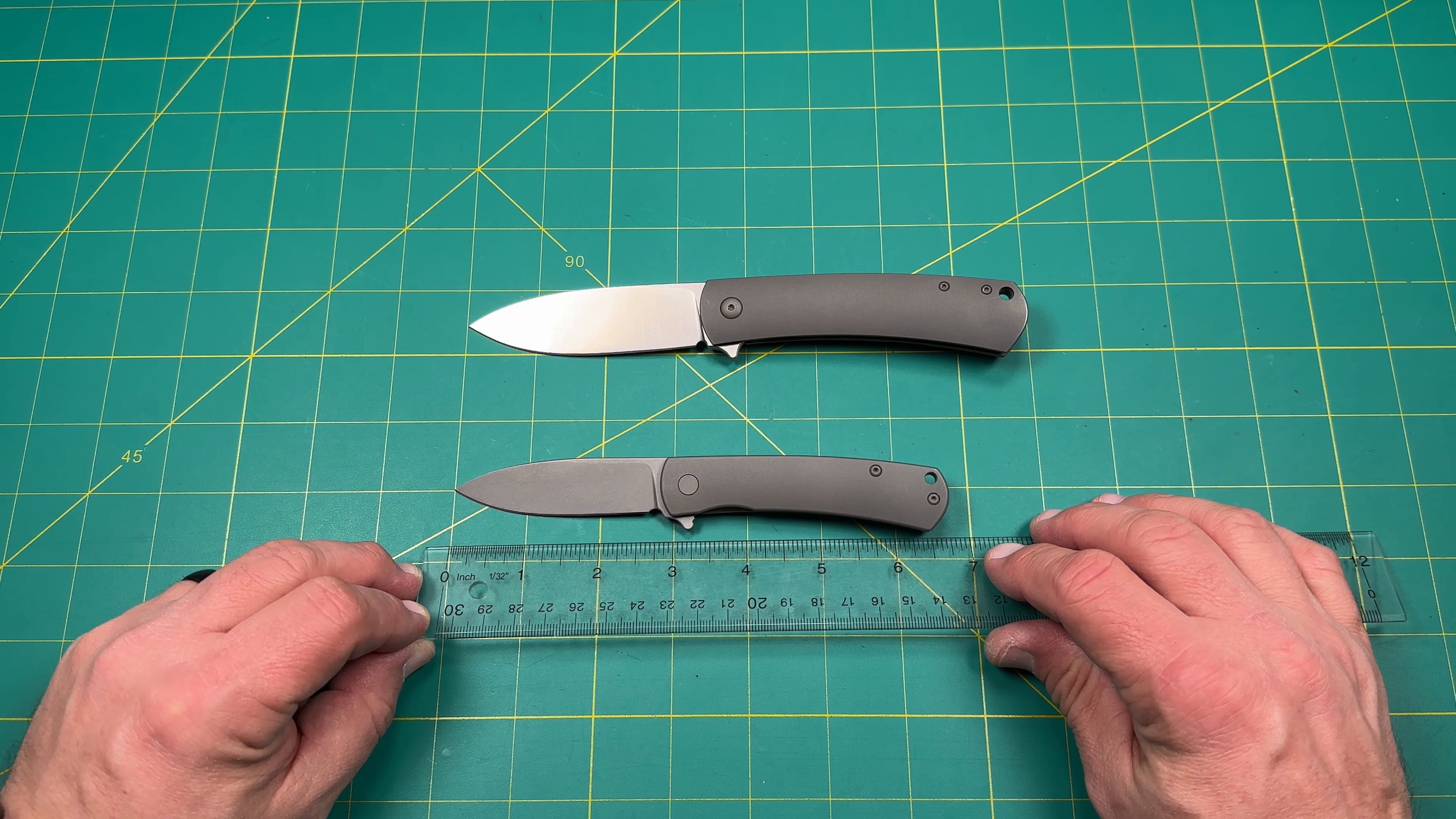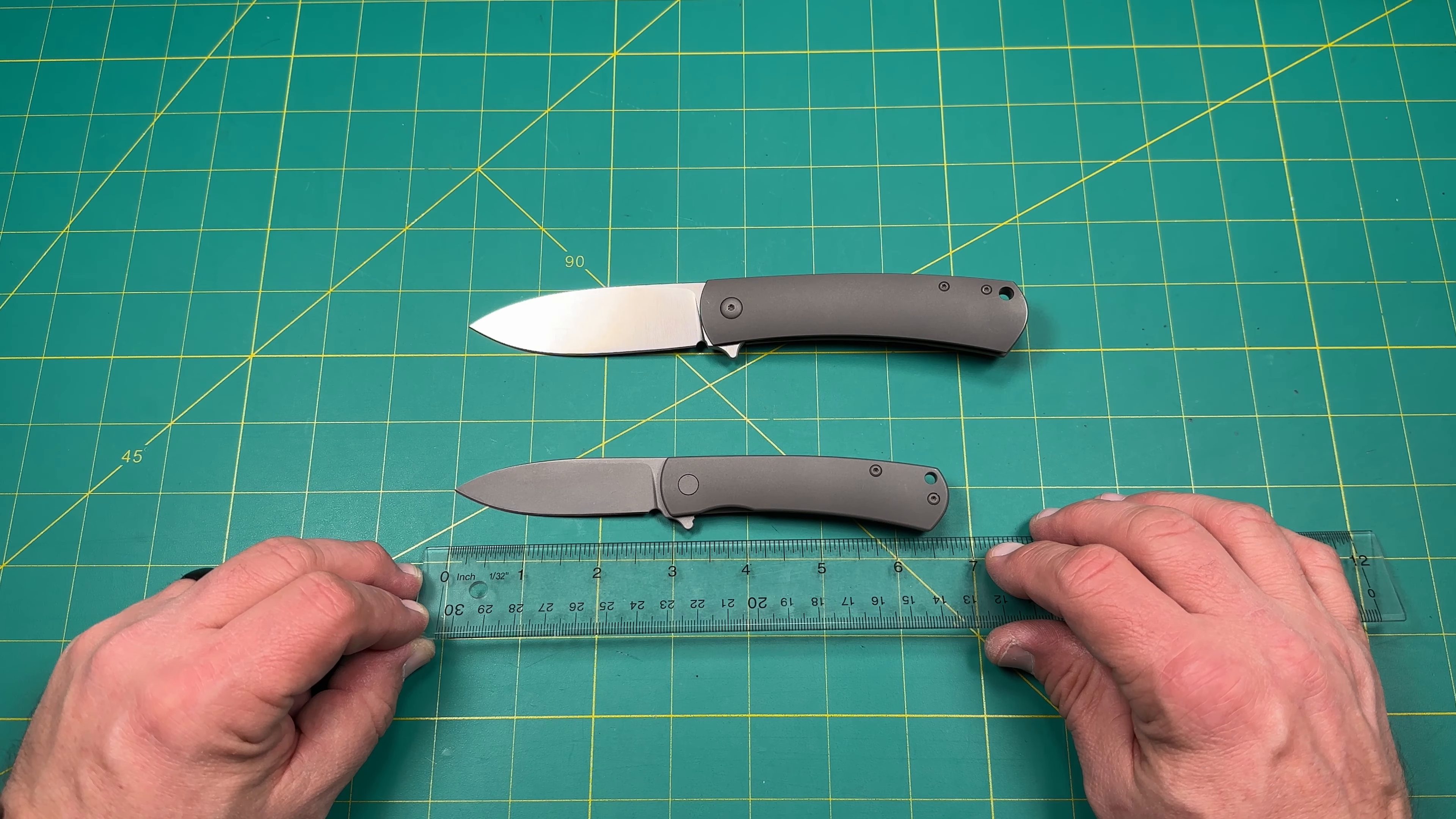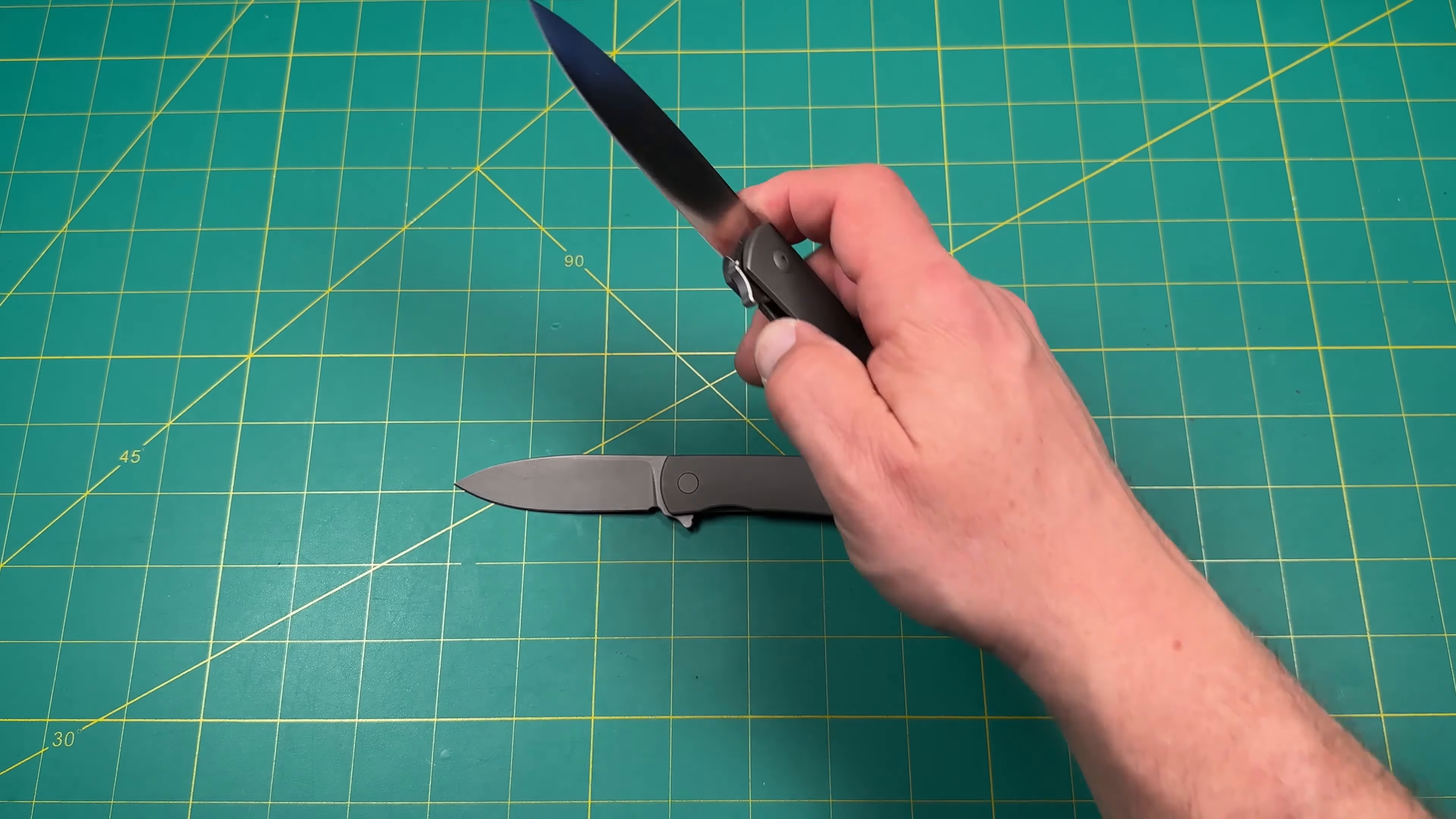So the overall edge going from the tip to the back, we're looking at about two and a quarter to two and three quarters, maybe two and four fifths, something like that. Overall cutting length, if we go from the tip to there, we're about 2.75 inches for cutting length.